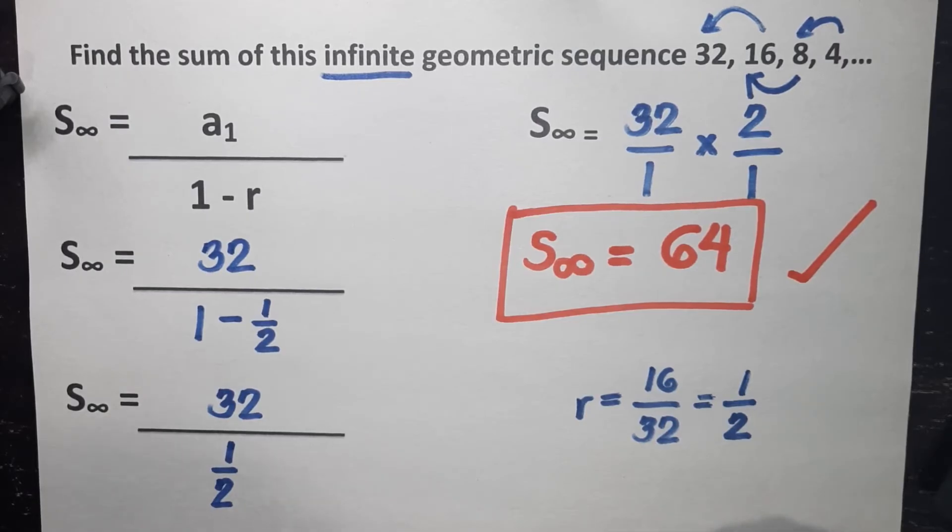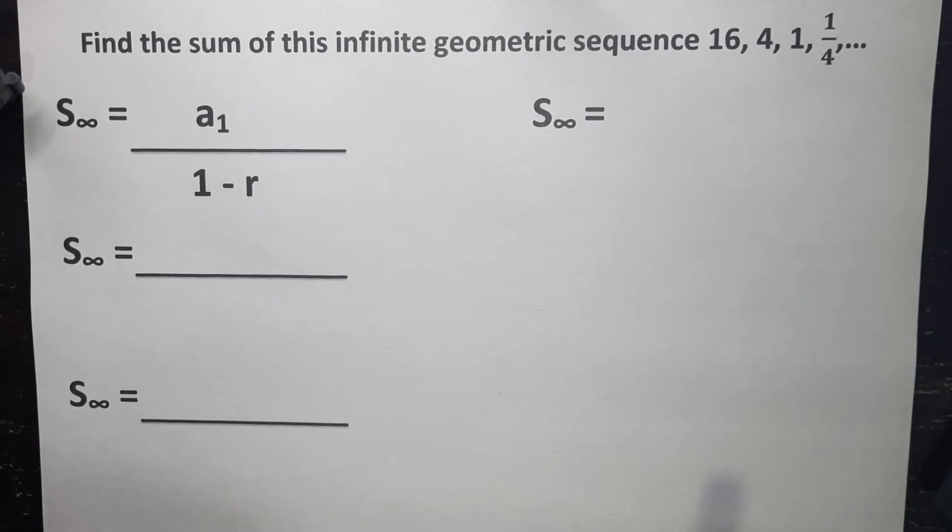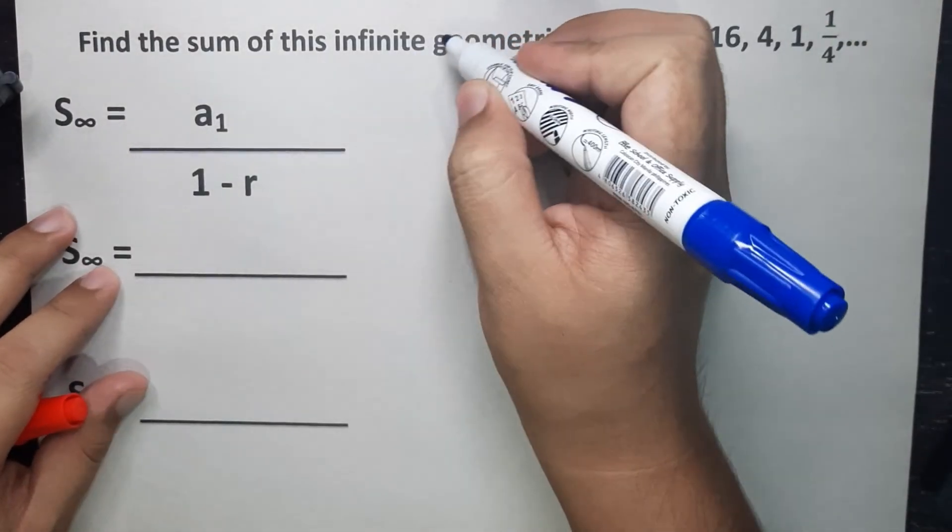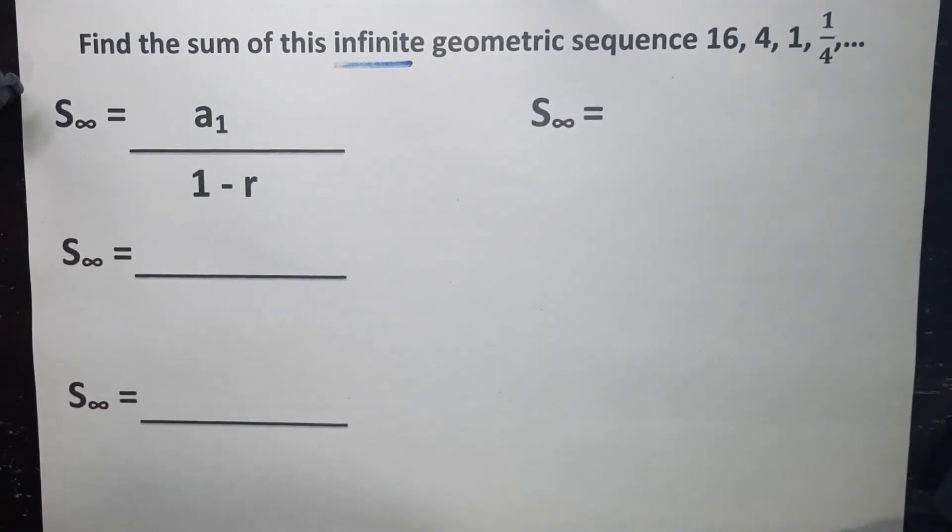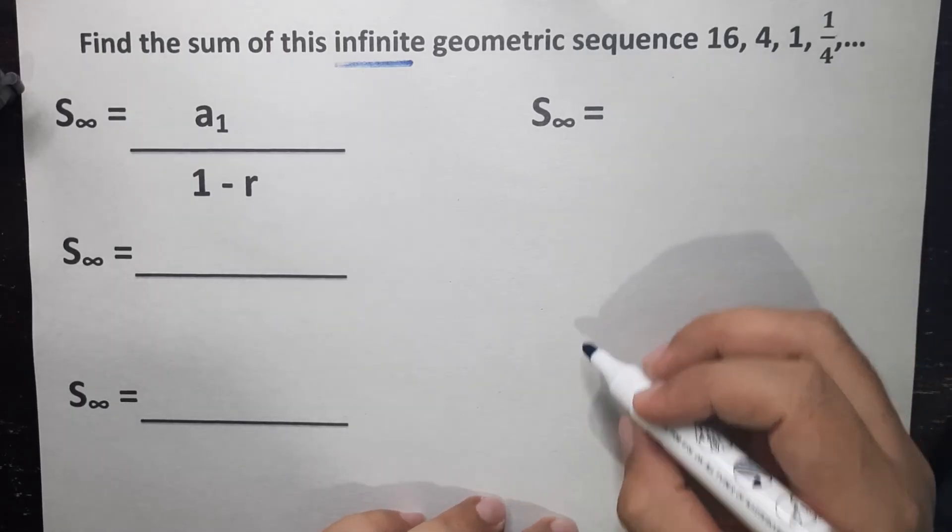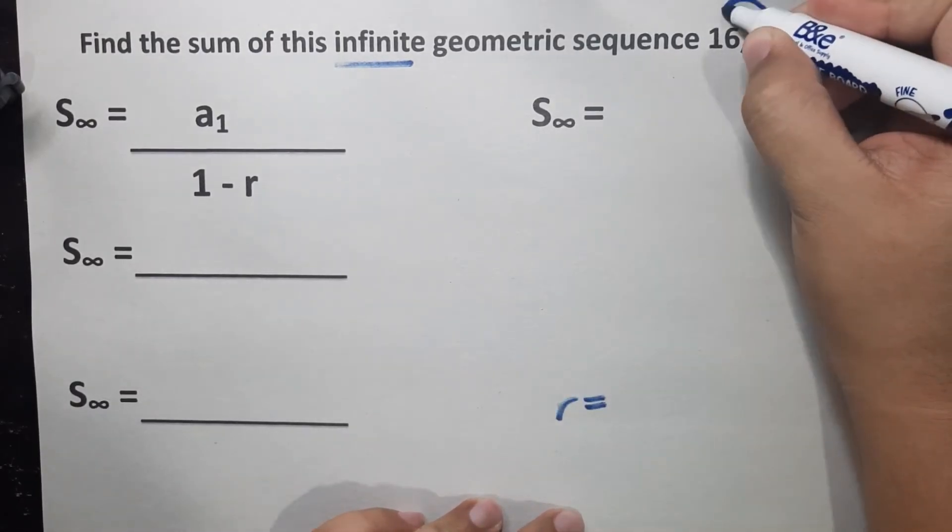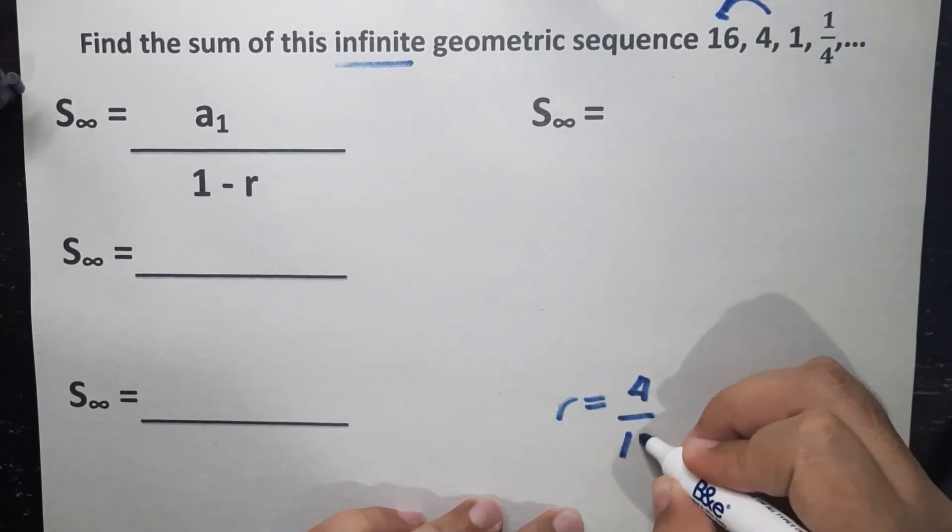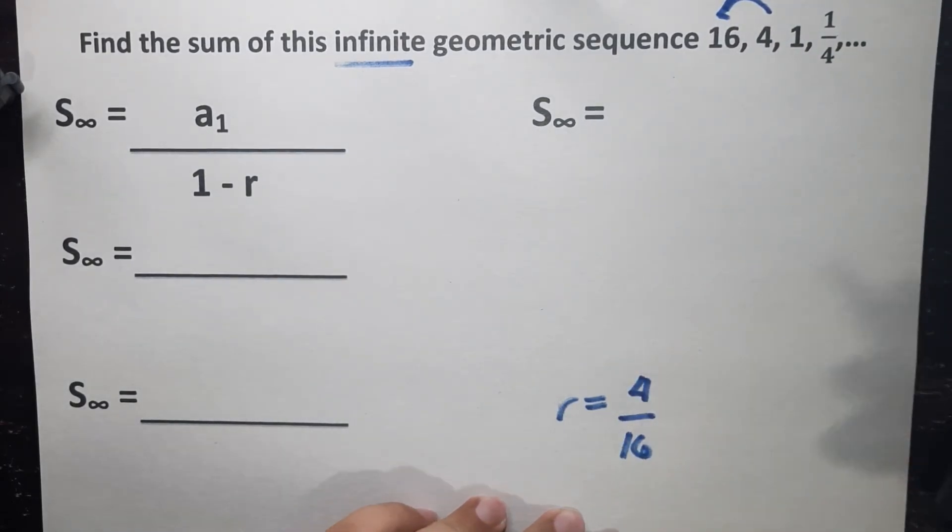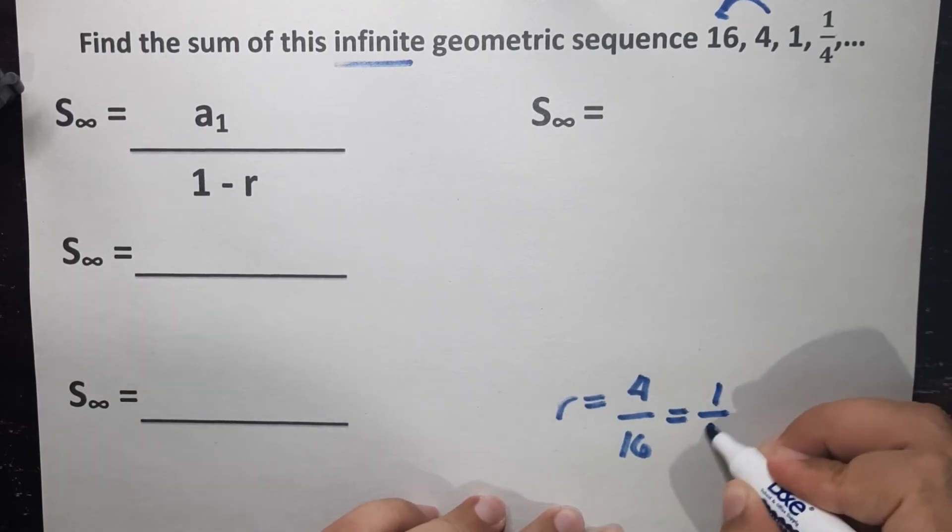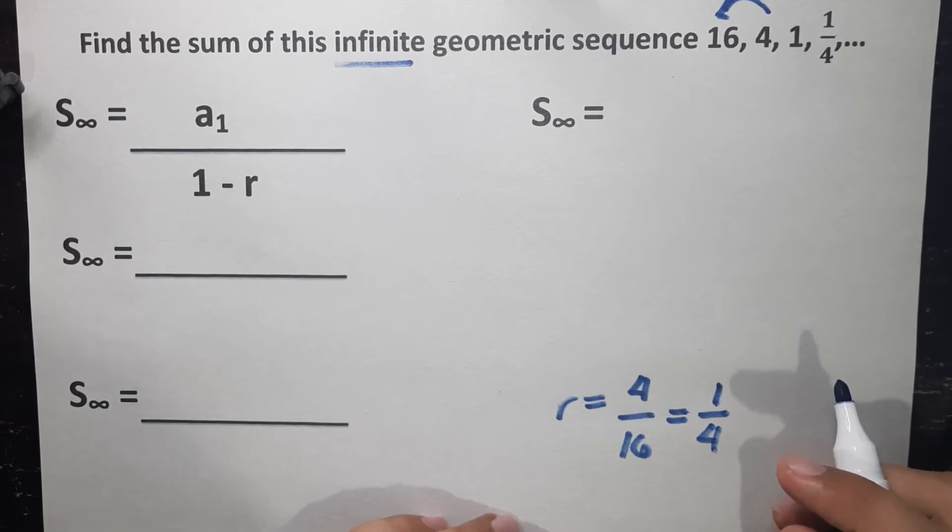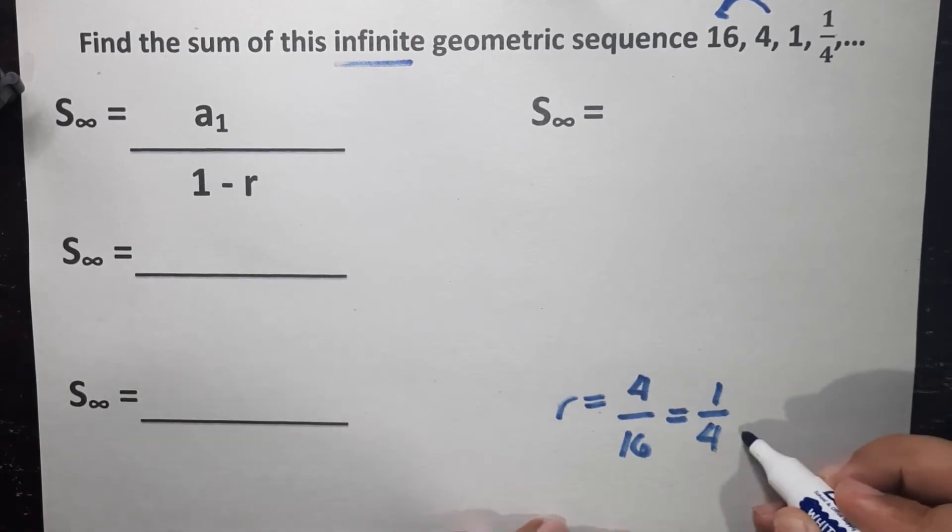Now let's proceed to our second example. Find the sum of this infinite geometric sequence, 16, 4, 1, and 1 fourth. Again, still on the infinite geometric sequence. So step 1 is always to find the common ratio. So common ratio is, again, current term divided by the previous term. So I'll use 4 divided by 16. 4 and 16 can be reduced to lowest term, which is 1 fourth. So 1 fourth is not greater than 1, it's not 0, and it's not less than negative 1. So which means based on the condition for common ratio, this 1 fourth as common ratio is valid. So we can solve.